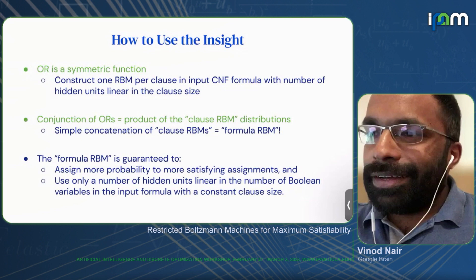The original Martens et al. paper showed you need O(n²) hidden units where n is the number of visible units, and a subsequent paper by Gu et al. in 2019 improved this to quasi-linear. For a three-SAT problem where every clause has three literals, the RBM will only have a linear number of hidden units with respect to the number of variables in the formula — exactly the kind of property you want. If it were exponential, there'd be no hope for this approach; the linear guarantee makes it very tractable.